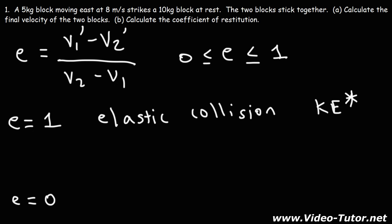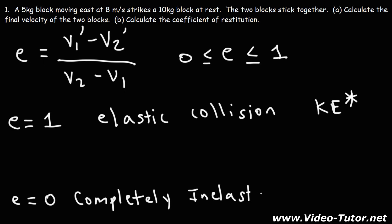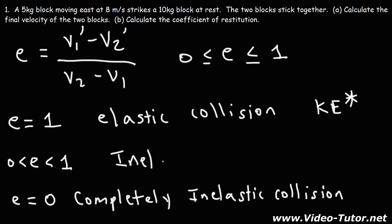When the coefficient of restitution is equal to 0, you have what is known as a completely inelastic collision. For all types of collisions, momentum is conserved. For an inelastic collision, kinetic energy is not conserved. If the coefficient of restitution is between 0 and 1, you just have a regular inelastic collision. So that's what the coefficient of restitution will tell you — whether the collision is elastic or inelastic, and to what degree: completely inelastic or partially inelastic.